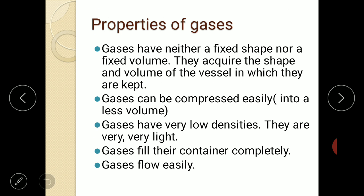Some properties of gases — common examples include air, oxygen, hydrogen, carbon dioxide, nitrogen, and steam. Gases have neither a fixed shape nor a fixed volume; they acquire the shape and volume of the vessel in which they are kept. Gases can be compressed easily into very less volume. They have very low density, meaning they are very light in weight. Gases fill the container completely and flow easily.